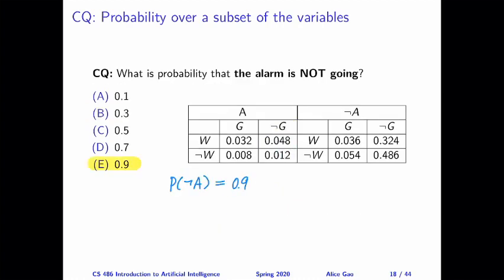For the third question, we want to calculate the probability that the alarm is not going. In this case, we're summing out both W and G. Which means in terms of the table, we are looking at the whole right-hand side of the table, and we need to add up four numbers.